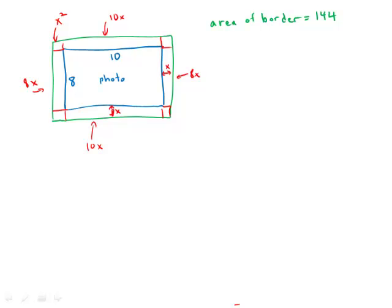So the border altogether is 4X squared plus — since 10 plus 10 plus 8 plus 8 is 36 — 36X, and that should equal 144.